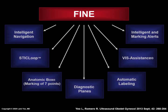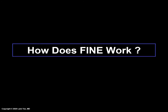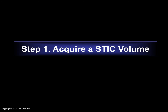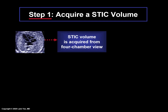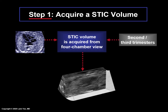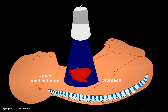FINE consists of all of the features shown here, and each of these will be discussed separately in this lecture series. Now we will provide an overall review of how FINE works. The first step is to acquire a STIC volume data set. We recommend that this be acquired from the four-chamber view and between the second and third trimesters. With the four-chamber view as the acquisition plane and applying appropriate settings, the volumetric ultrasound probe should automatically sweep from the fetal upper mediastinum down to the stomach.